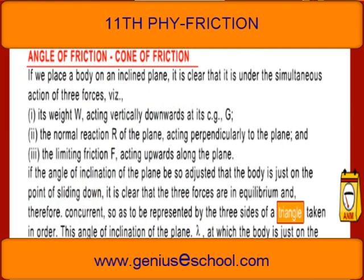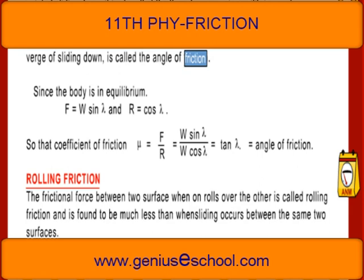The angle of inclination λ at which the body is just on the verge of sliding down is called the angle of friction. Since the body is in equilibrium, F = W sin λ and R = W cos λ, so that the coefficient of friction μ = F/R = W sin λ / W cos λ = tan λ. Thus, the coefficient of friction equals the tangent of the angle of friction.